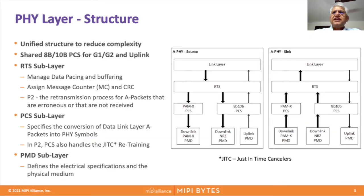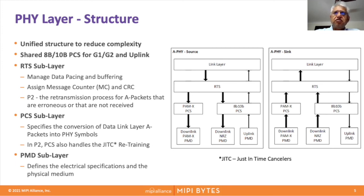This slide gives a top-level building block view of the source and sync sides of A5. Starting from the bottom, there is the PMD — physical media dependent — block for PAM-X and NRZ downlink as well as uplink. Above that is the PCS layer, the physical coding sublayer. Then there is a retransmission layer — A5 supports retransmission for faulty packets — and then there is the link layer. This structure is similar for both source and sync; for dedicated details of each one must refer to the specification.